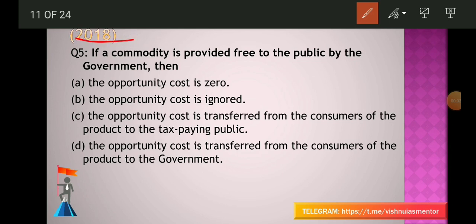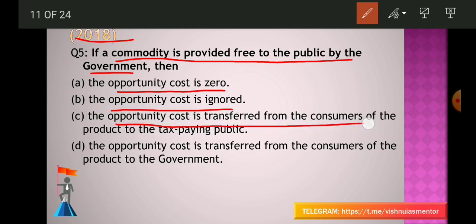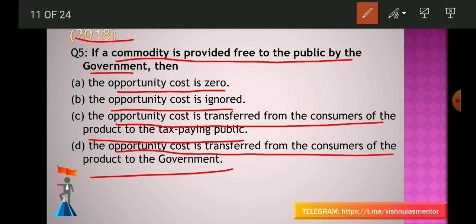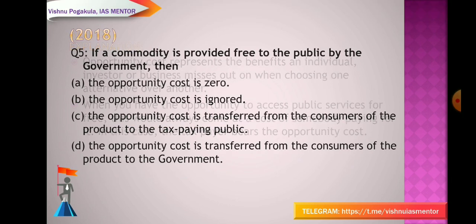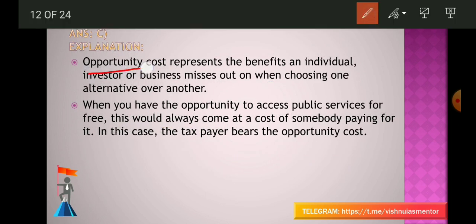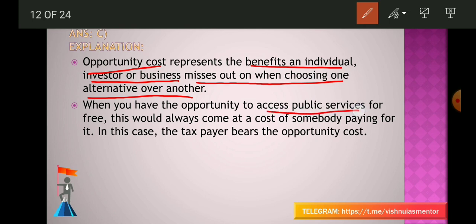From the 2018 question paper: If a commodity is provided free to the public by the government, which is correct? (A) Opportunity cost is zero, (B) opportunity cost is ignored, (C) opportunity cost is transferred from consumers to the tax-paying public, (D) transferred to the government. The answer is C. Opportunity cost represents the benefits one misses out on when choosing one alternative over another. When public services are free, someone still pays — in this case the taxpayer bears the opportunity cost.